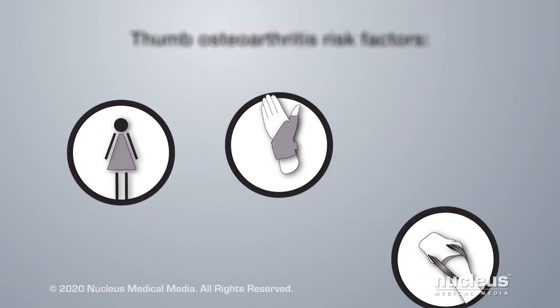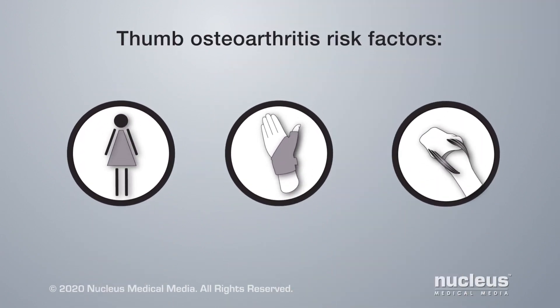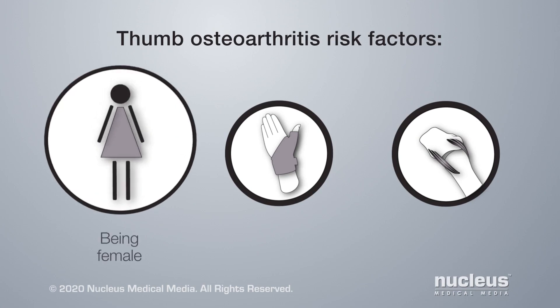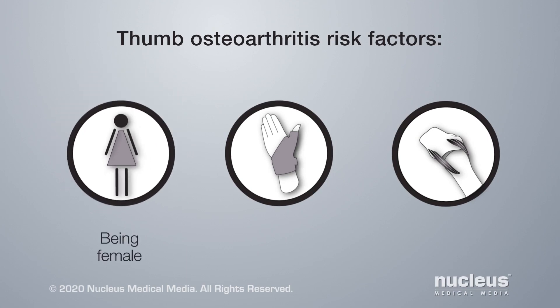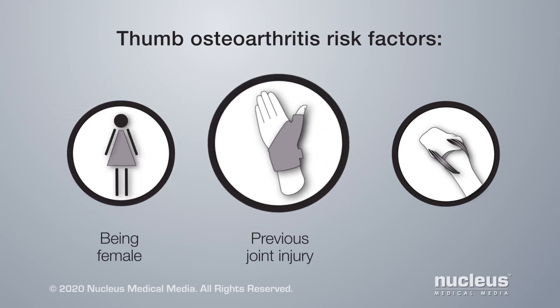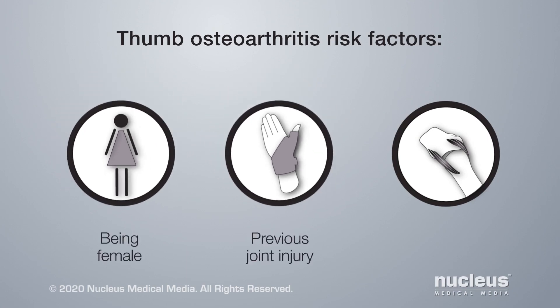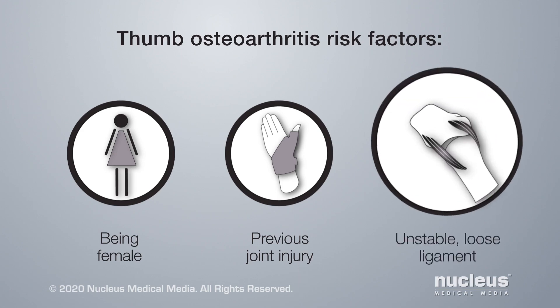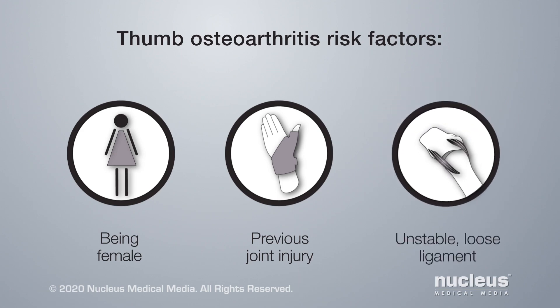You may have a higher risk for getting thumb osteoarthritis if you're female, you've had a previous injury to the joint, such as a fracture, or if you have an unstable loose ligament in the joint.